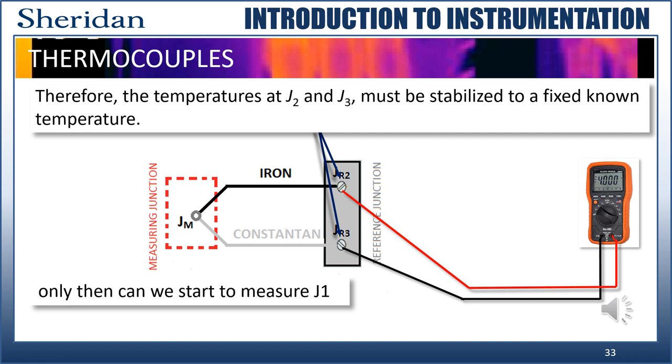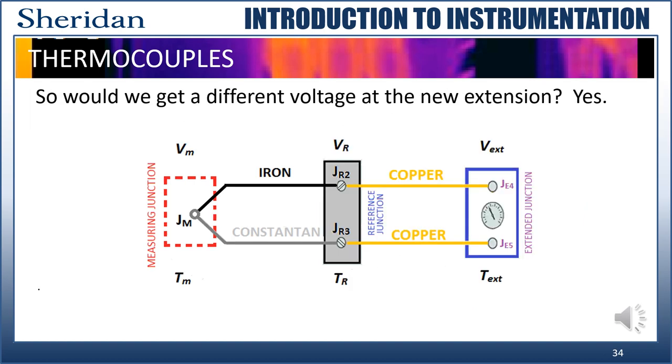So we took care of that with the isothermic block, right? Yes, but we're not controlling the temperature where the multimeter is, and that, again, creates a difference, and again, we have a problem. So we must, therefore, stabilize the temperatures at J2 and J3 to a fixed known temperature before the J1 voltage and temperature can be properly measured. This is beginning to sound like an impossible task. I mean, how on earth do you get the temperature at the measuring junction if the voltage produced keeps changing every time you try to read it? Well, fortunately, the answer lies in something called the law of intermediate temperatures.